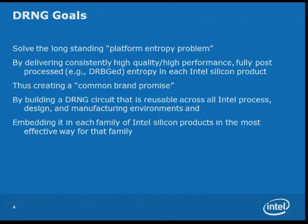We're going to deliver consistently high quality, high performance, fully post-processed — not raw — cooked entropy on each Intel silicon product. The goal is that if entropy is needed on a piece of Intel silicon, this device will be there ubiquitously. When we first started this program, there were half a dozen different analog ring oscillator based TRNGs on Intel silicon, none of them related to anything else. It's been my goal to kill all six — I'm down to one left.